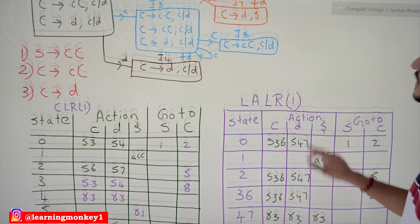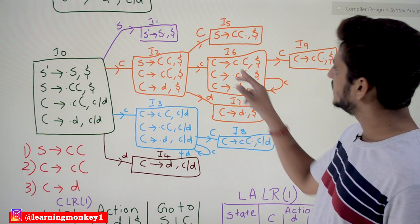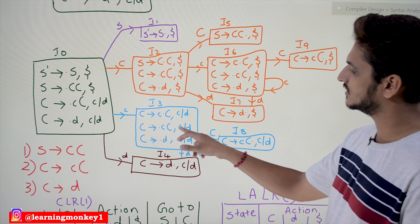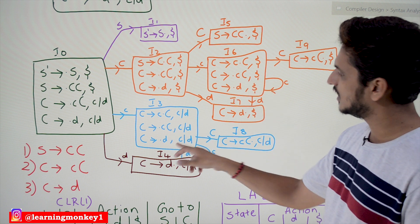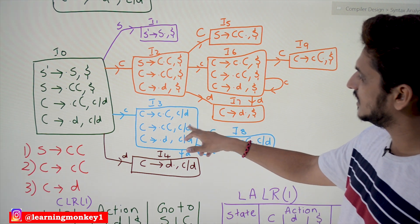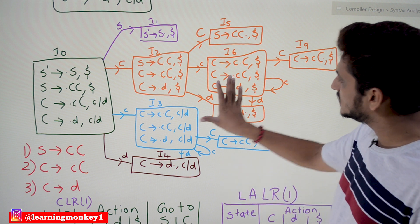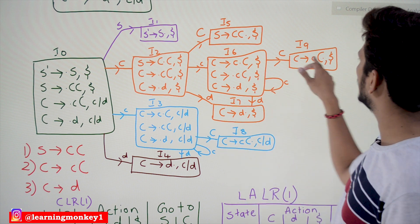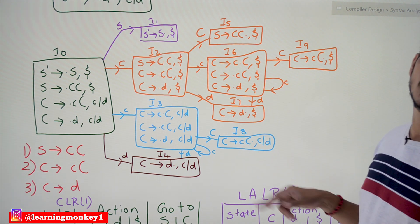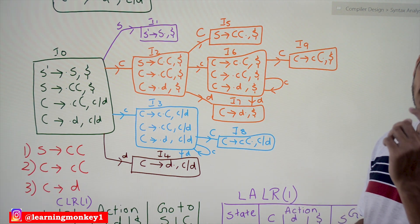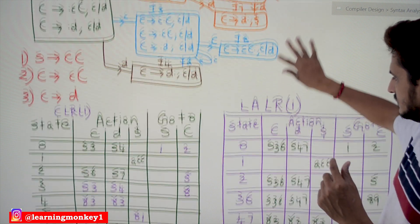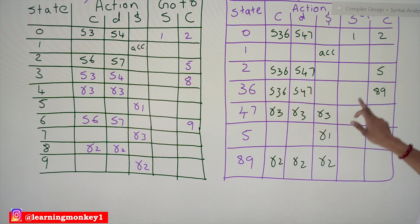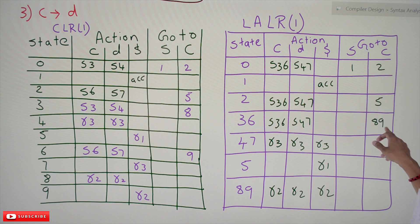Similarly, i3 and i6 have the same set of productions: C tends to c dot capital C; C tends to dot c capital C; C tends to dot d. The look-ahead symbols are different — c, d, dollar — but the core items are the same, so we combine them as state 3-6. Now, on state 3-6, if we take the transition on capital C, it moves to either eighth or ninth state — but 8-9 is already combined. So the goto on capital C from state 3-6 goes to state 8-9.